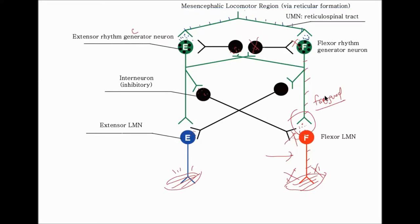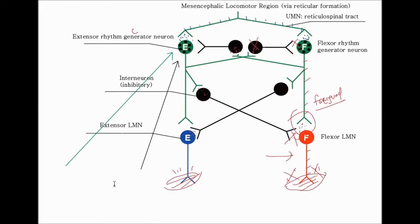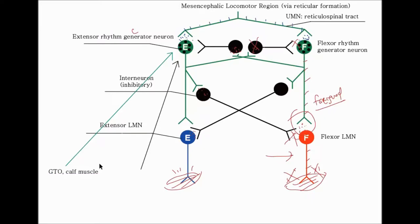The last part of the story is to include the sensory afferent signals. We have two sets of sensory signals that can influence the CPG. One is the Golgi tendon organ (GTO) in the calf muscle, the extensor muscles. The effect of the GTO on the CPG is indicated by the green arrow, showing it has an excitatory signal to the extensor.